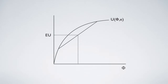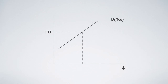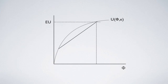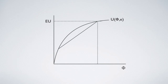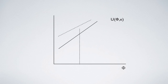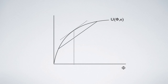Expected utility is a constant, so no maximization can be derived. Maximum expected utility, if any, must be a common solution. But there is no tendency or first-order condition like this.